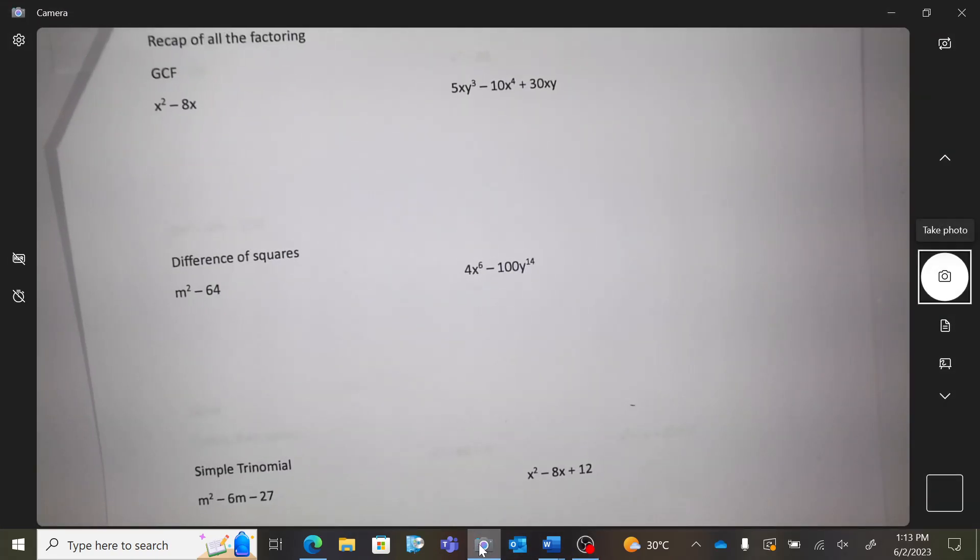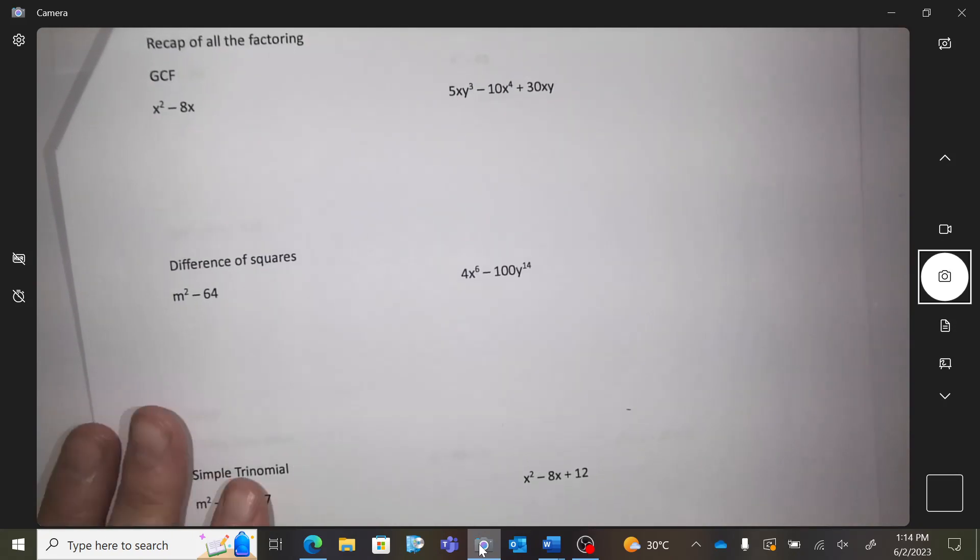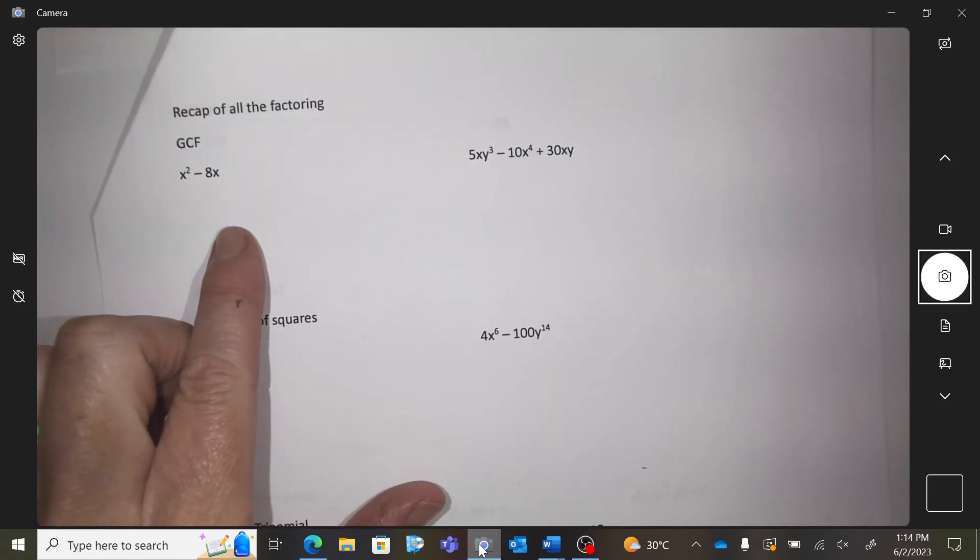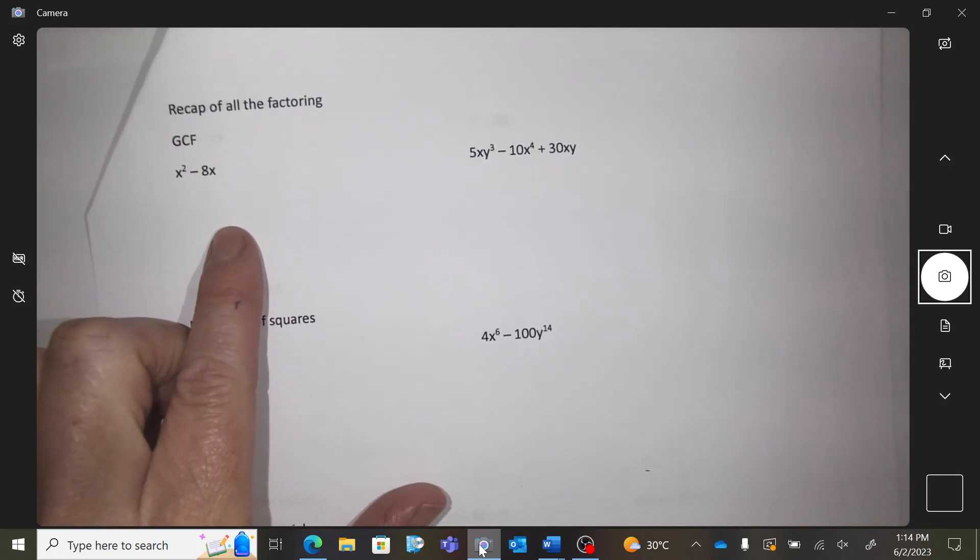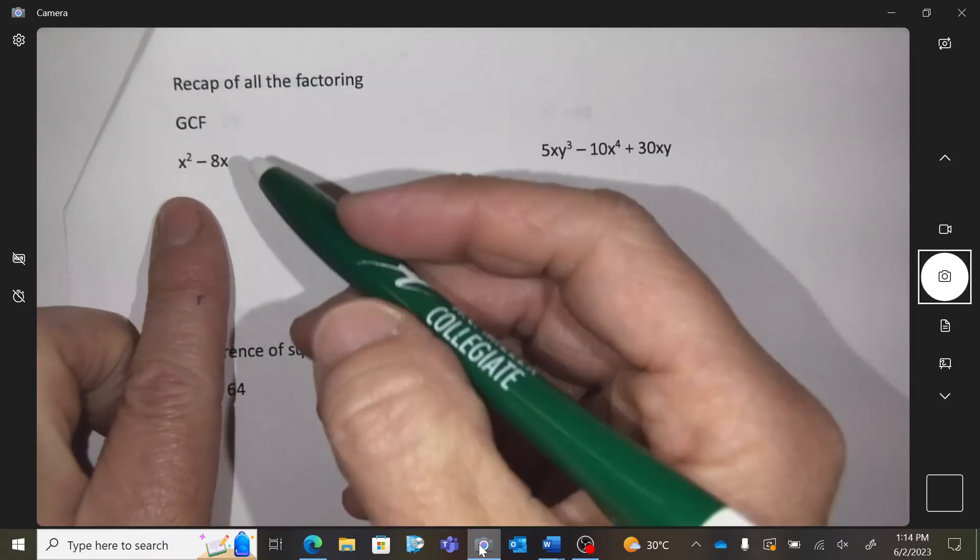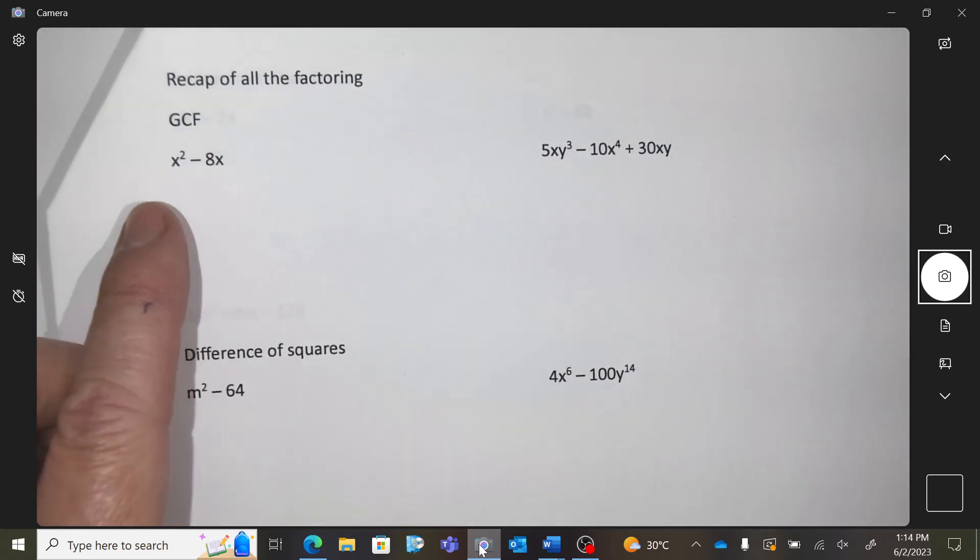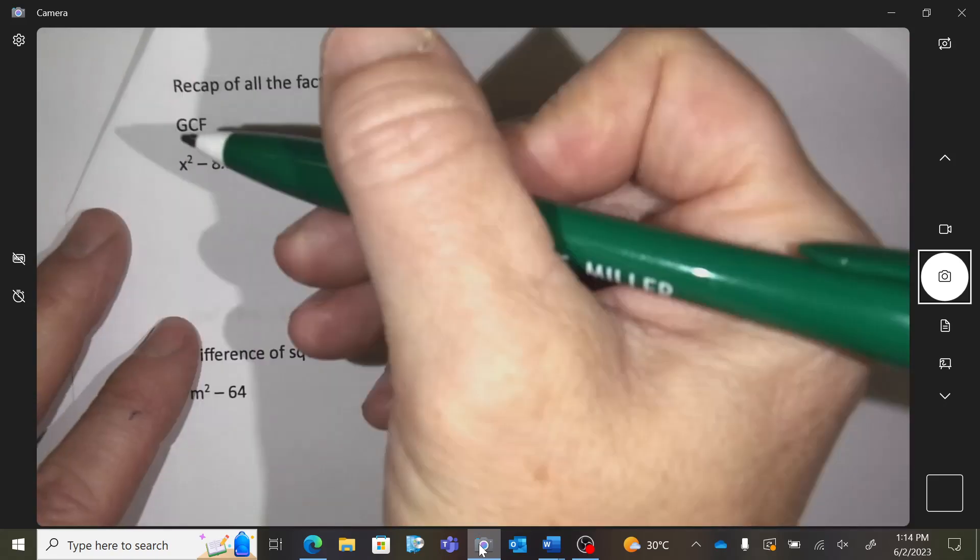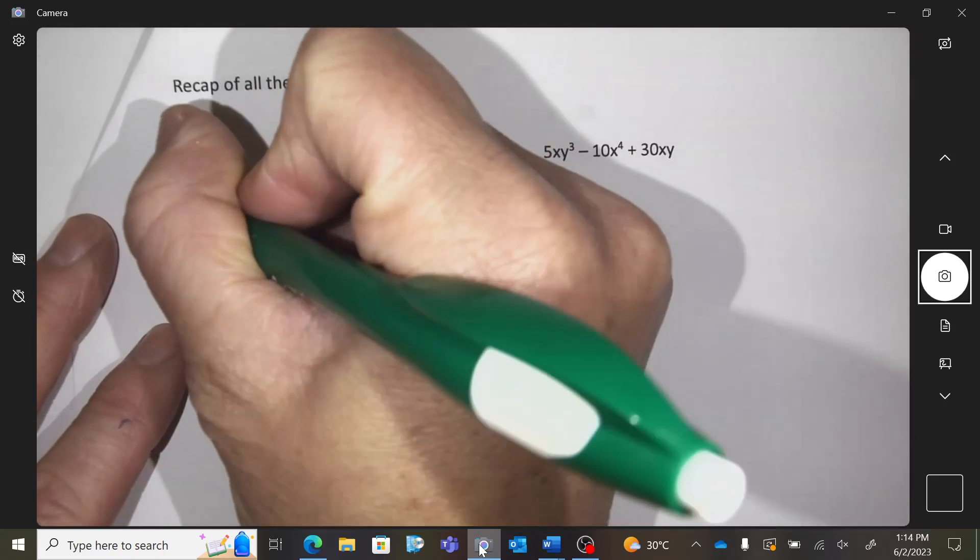So the first style of factoring is called GCF. Do you remember what it stands for? Greatest Common Factor. That means that in all the terms, I would have something that's common. So for this first one, there's an x squared, there's an 8x. So this term and this term are both divisible by what? By x.